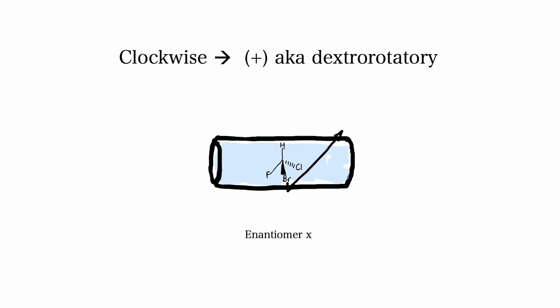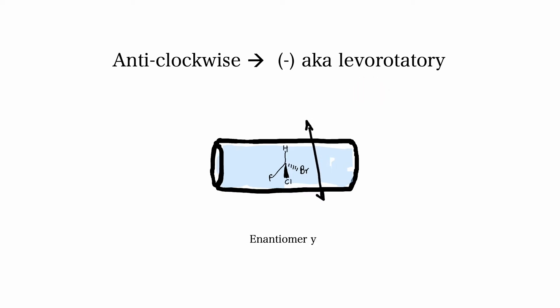If a compound rotates the plane polarized light in a clockwise direction, it is labeled with a plus and is called dextrorotatory. If it rotates plane polarized light in the counterclockwise direction, it is labeled with a negative or a minus and is called levorotatory.